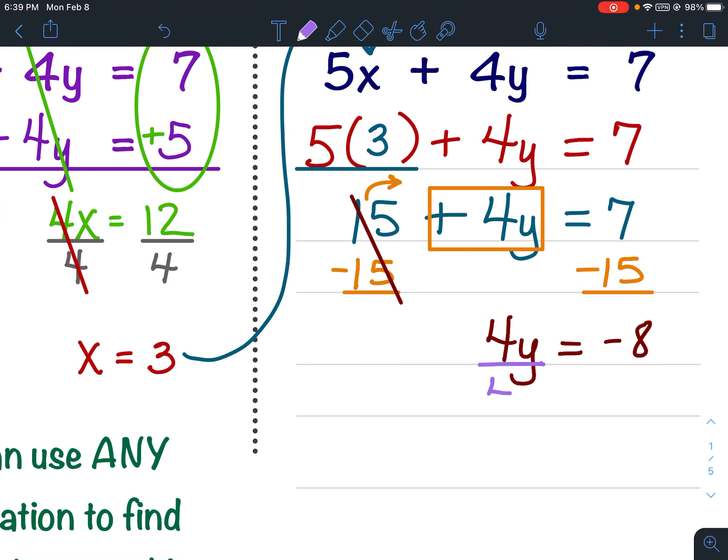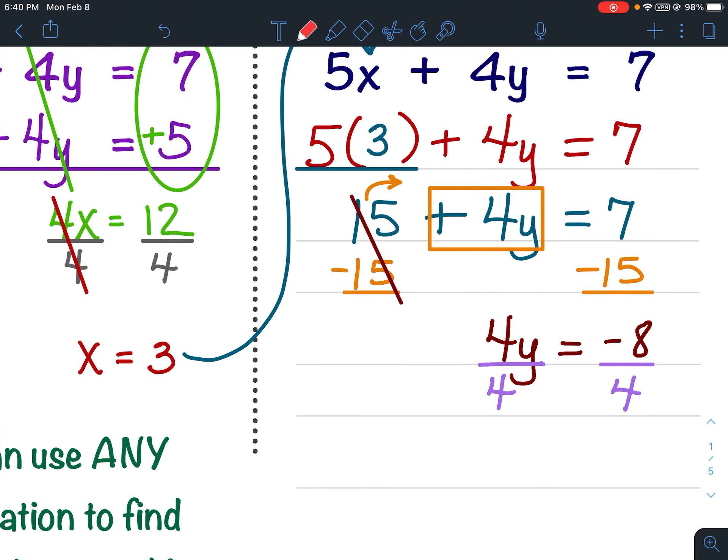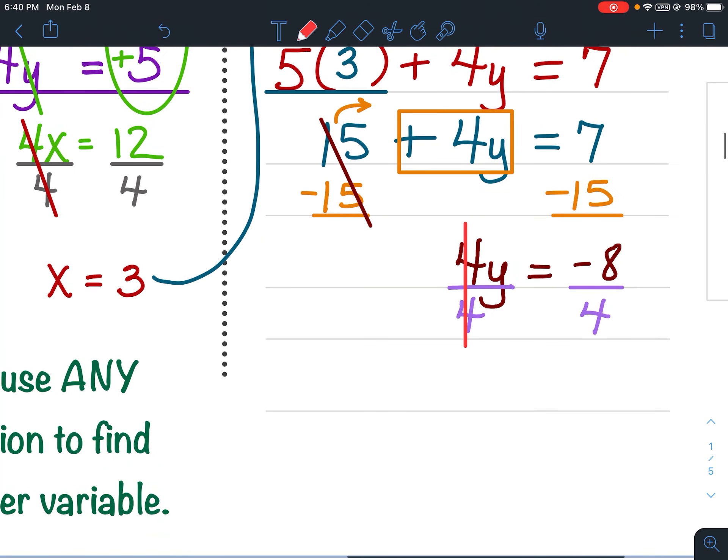One more step. Isolate the variable. The opposite of multiplication is division. The 4s would cancel. And we would get y equals negative 8 divided by 4 is negative 2.